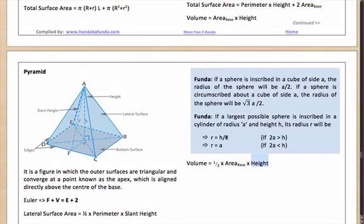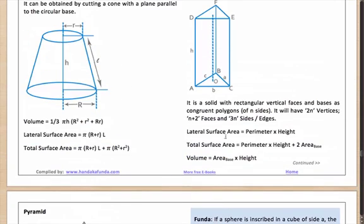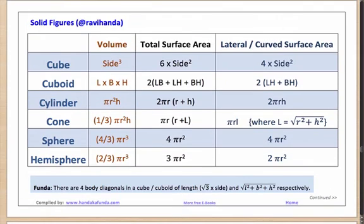Going back to the original figures: a cone is essentially a pyramid, so its volume (1/3)π R² H follows directly from the pyramid formula. A cylinder is a prism, so its volume π R² × H follows from the prism formula of area of base times height.